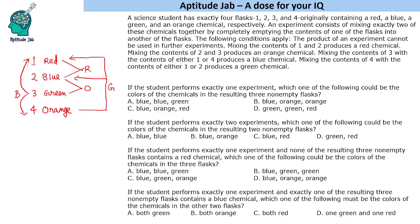Starting with option blue, blue, green: that means blue should not be touched and another blue should be obtained by mixing. Blue remains intact, and another blue can be obtained by mixing green and red. But that would give blue, blue, orange - not blue, blue, green. So that option is eliminated.